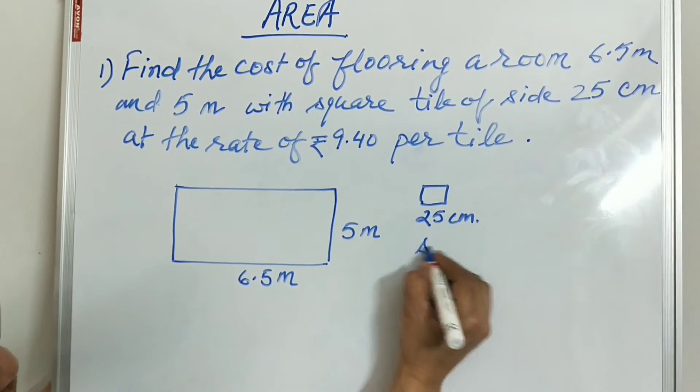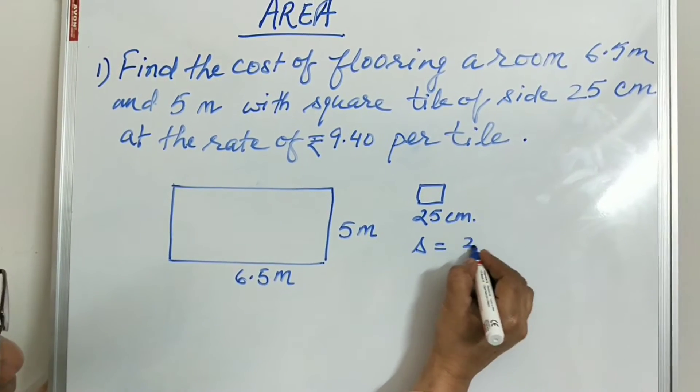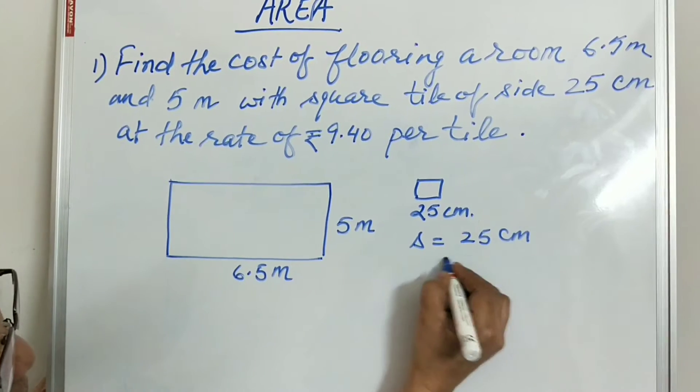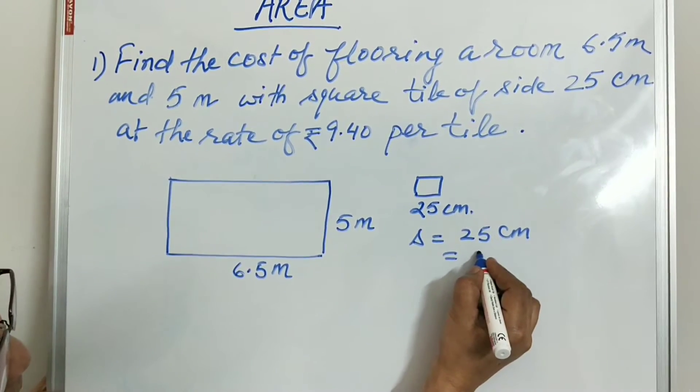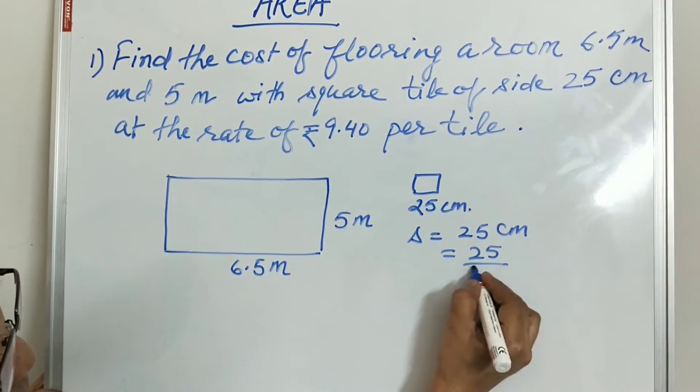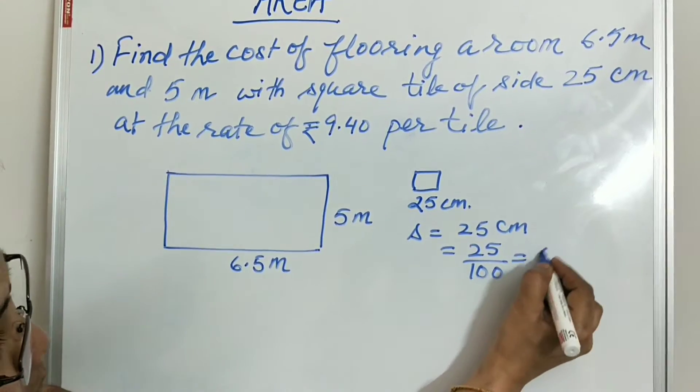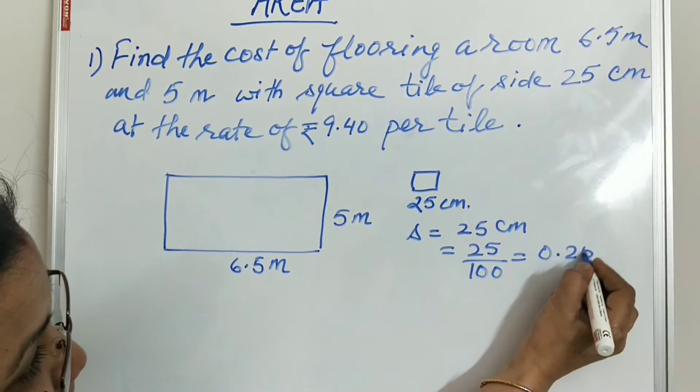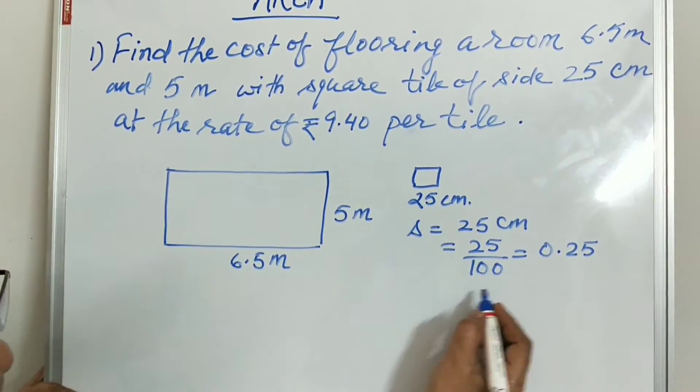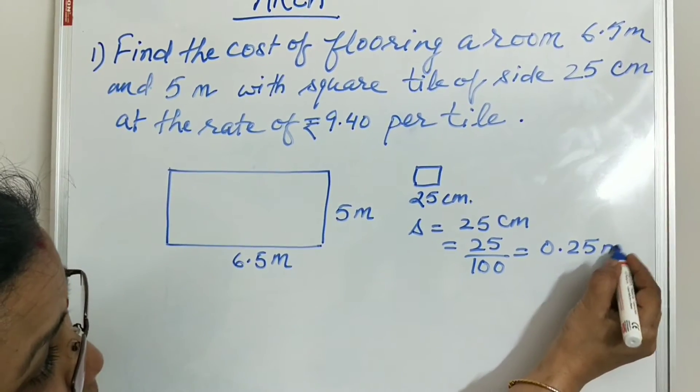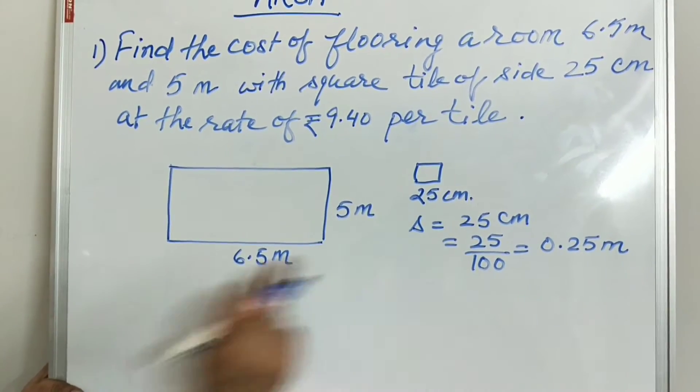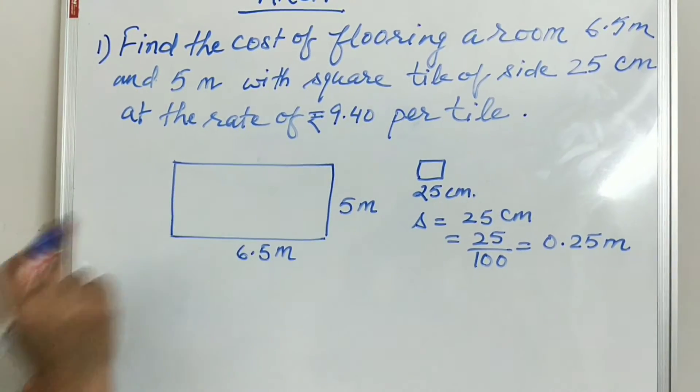To convert to meters, 25 divided by 100 gives 0.25. So the side of the square tile will be 0.25 meter.